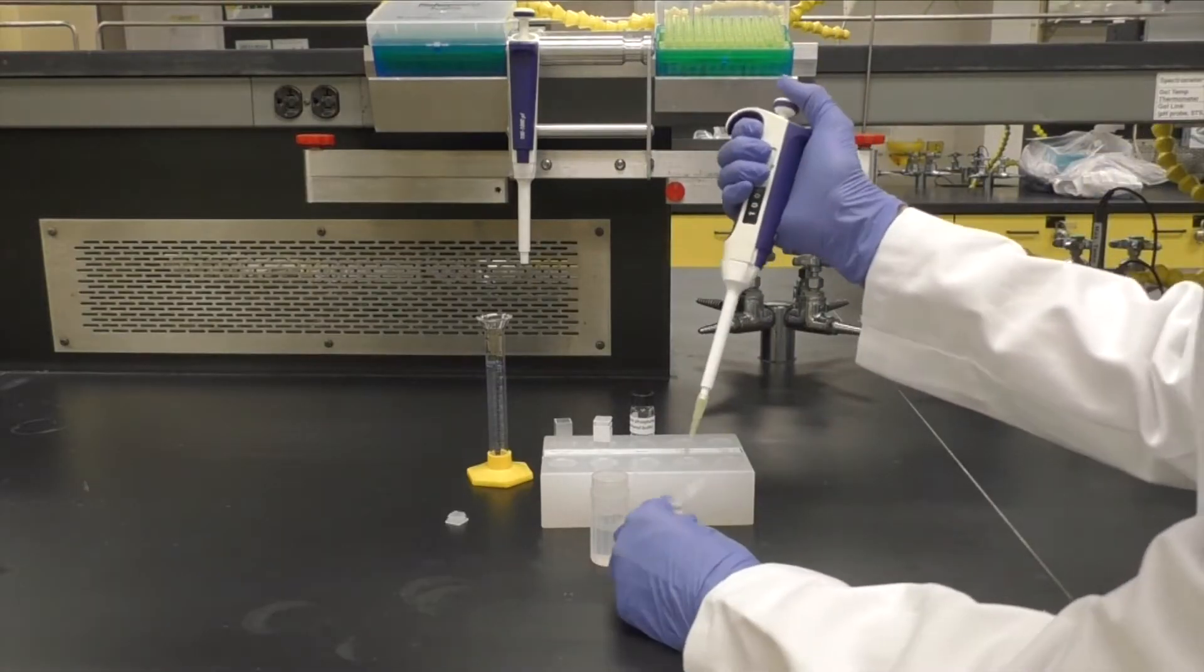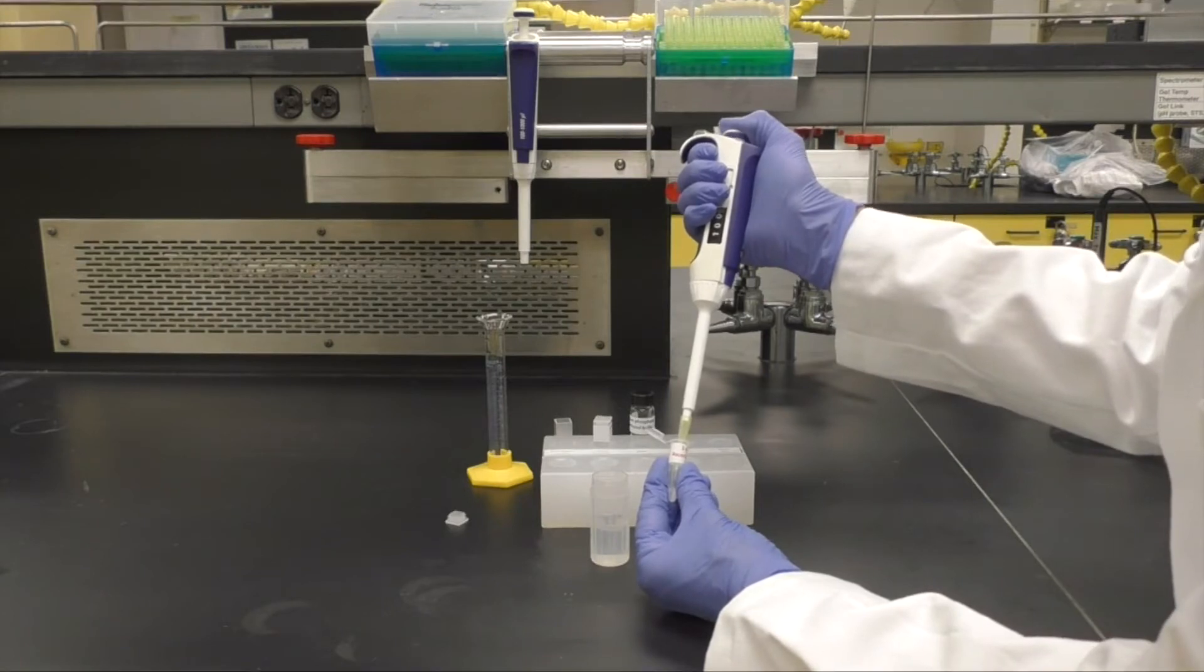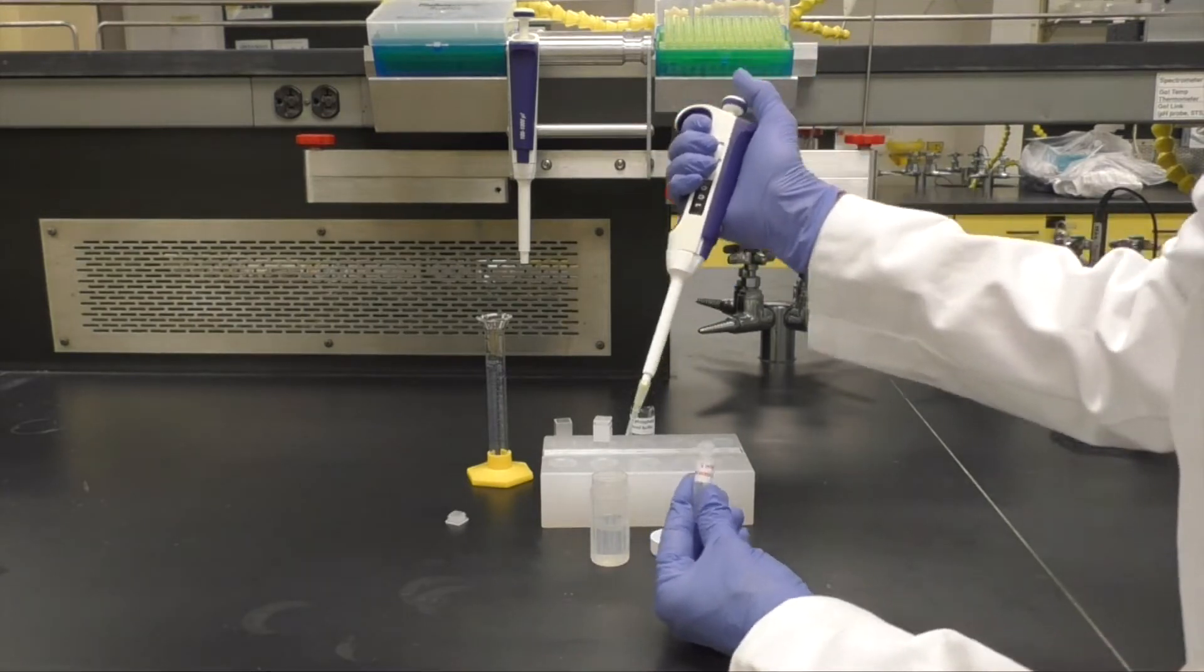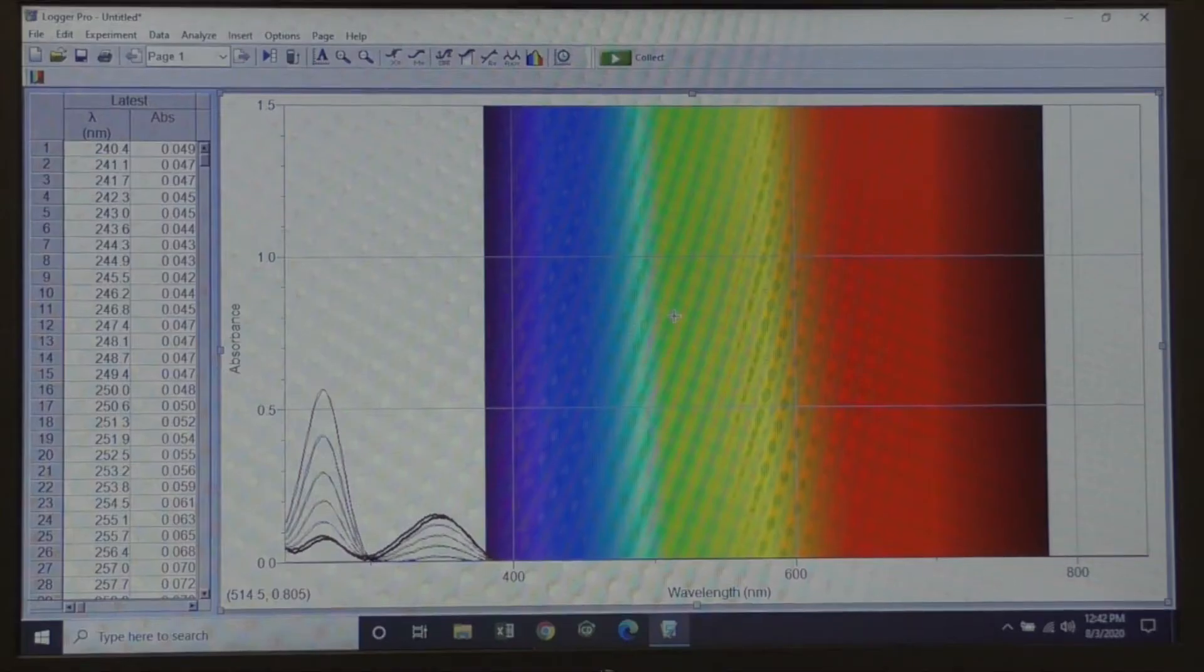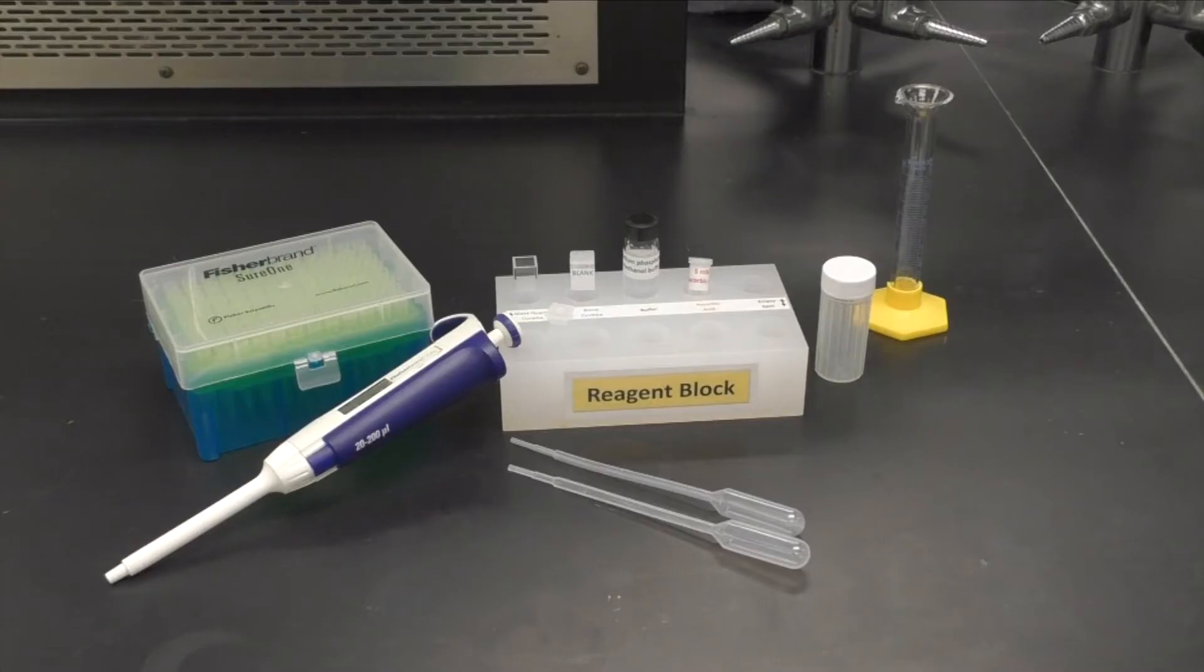This video will show you a procedure which will enable you to visualize the oxidation of ascorbic acid, commonly known as vitamin C, using a UV-Vis spectrometer. To perform the experiment, you'll need the following items.